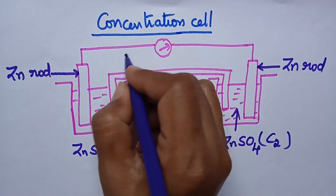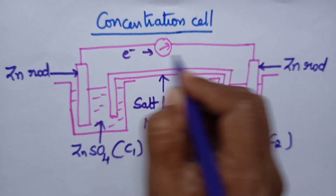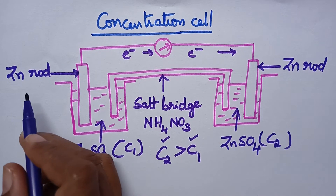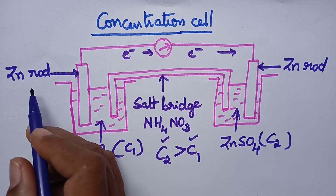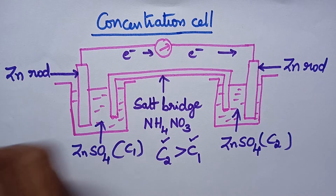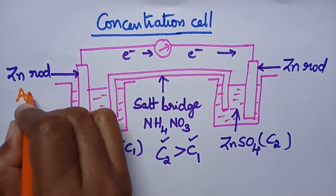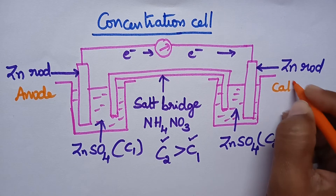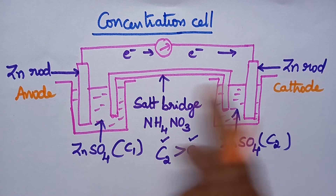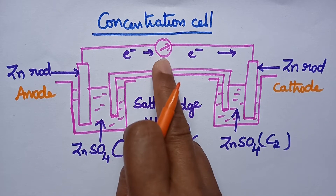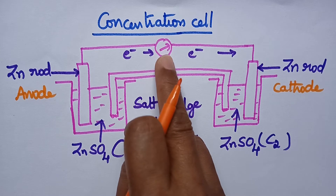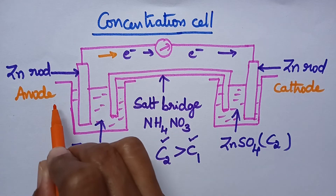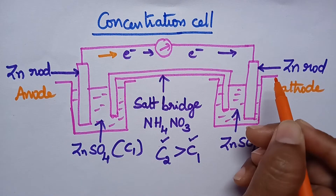In this way, we can observe the potential difference between the two electrodes. Always the electrode present on the left-hand side acts as the anode, and the electrode present on the right-hand side acts as the cathode. These two electrodes are connected to the voltmeter. The deflection in the voltmeter shows the direction of flow of electrons — always electrons will flow from anode to the cathode.